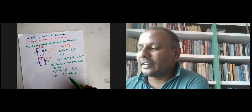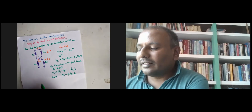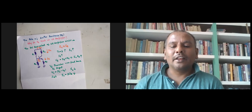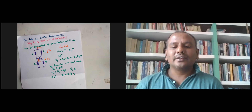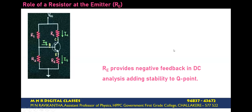So the conclusion is: whenever there is a change in collector current with an increase in temperature, this leads to an increase in emitter voltage, which leads to negative feedback. It decreases the input voltage and hence base current decreases and collector current decreases. The change in collector current is automatically adjusted by the emitter resistance. Therefore, emitter resistance is very essential in maintaining a stable operating point and provides stabilization to the transistor amplifier circuit.